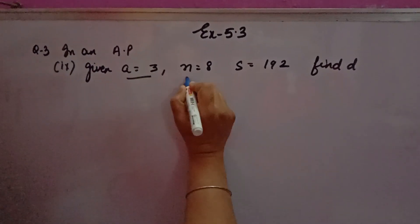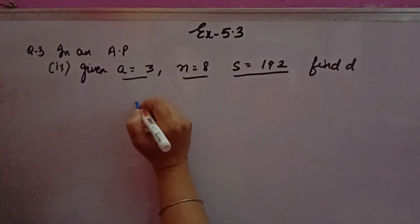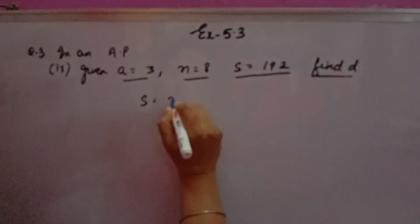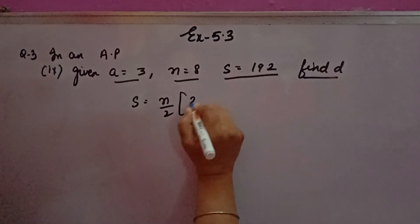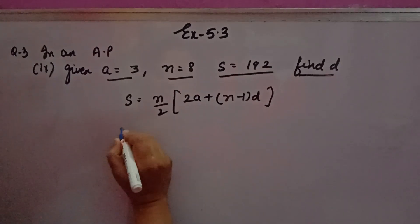Given a equals 3, number of terms are 8, and sum of 8 terms is given as 192, you have to find the value of d. The sum formula is S equals n by 2 times 2a plus n minus 1 into d.